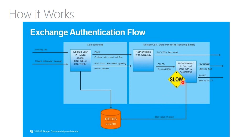If there is a failure in the ability to reach the user's mailbox via Auto-Discover, we would then send that voicemail via SMTP.